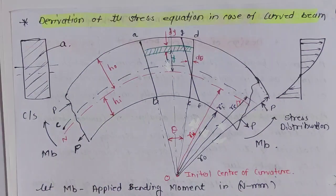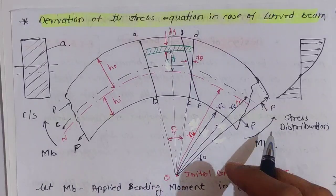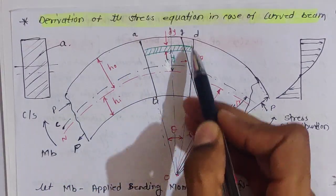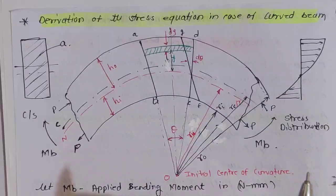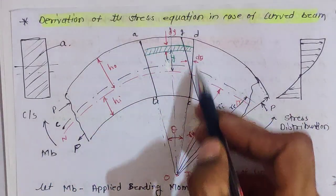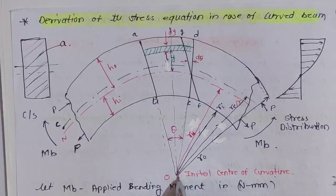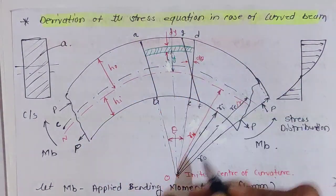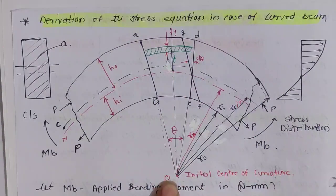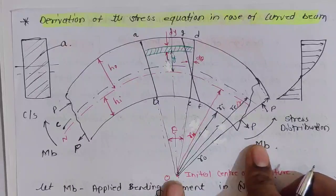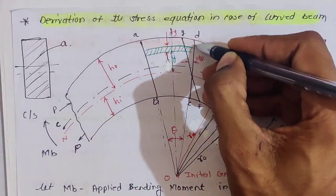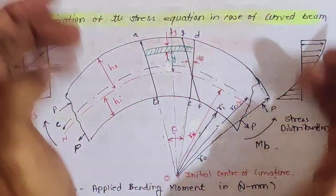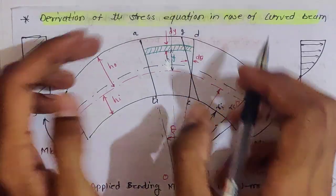Now I am considering the area ABCD. This ABCD area is making angle theta with the initial center of curvature before applying the bending moment.